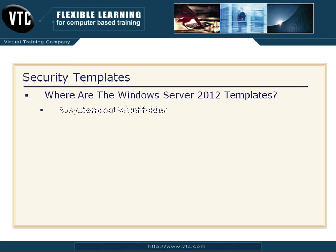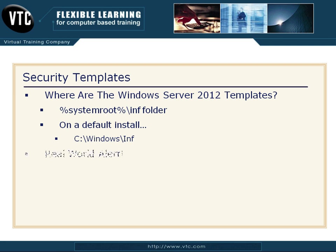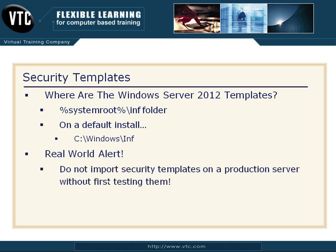Where are these Windows Server 2012 templates? They're in the system root slash INF folder. If you did a default install and didn't move anything, it's on the C drive in the Windows folder, in the INF directory. There are other things in there too, and I'll show you how to find those templates.